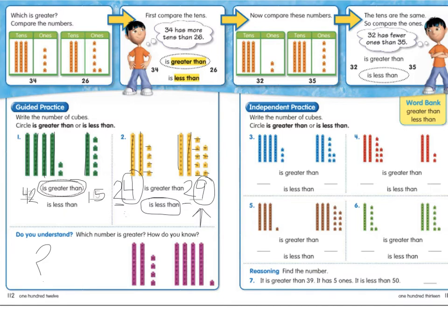Do you understand? Which number is greater? How do you know? Well, there's 10, 20, 21, 22, 23, 24 here. So I'm going to put a 24 here just to remind me. And there's 10, 20, 30, 40, 41. Well, I know that 40 is bigger than 20. So I'm going to circle this one. And the reason I know is because there are more tens.